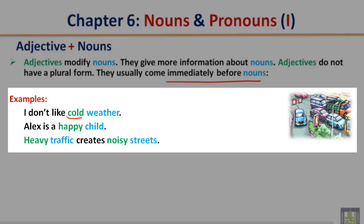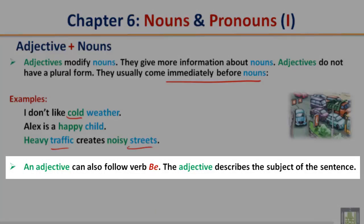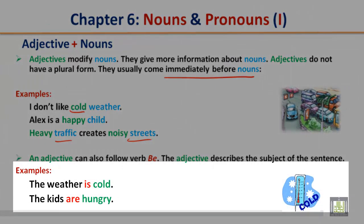Heavy traffic creates noisy streets. 'Heavy' and 'noisy' are the adjectives because they give more information about the nouns, which in this case are 'traffic' and 'streets.' An adjective can also follow the verb 'be'; the adjective describes the subject of the sentence. For example: The weather is cold. Kids are hungry — 'are' is the verb be, 'hungry' is the adjective describing the subject 'kids.'